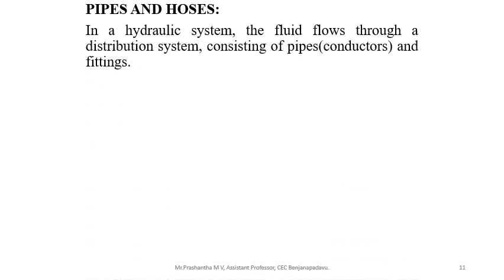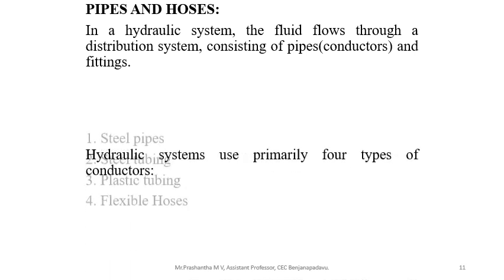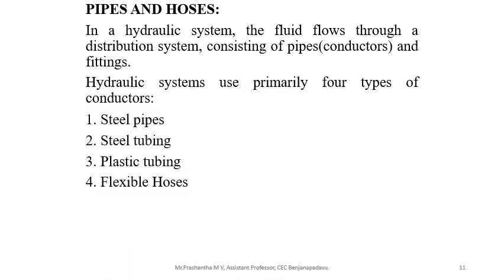The next concept is pipes and hoses, also called conductors. In a hydraulic system, the fluid flows through a distribution system consisting of pipes — that is, conductors — and fittings, which carry the fluid from the reservoir through the operating components and back to the reservoir. Hydraulic systems use primarily four types of conductors.